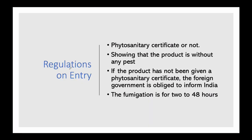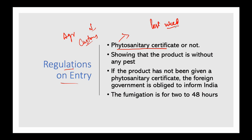When agricultural products come from other countries to India, our customs officers check whether they have a Phytosanitary Certificate or not. The Phytosanitary Certificate shows that the product has no infestation of any kind of pest or weed, and it is issued by the government of the exporting country. For example, if an agricultural product comes from Australia or America, we check the Phytosanitary Certificate issued by Australia or America as the exporting country - a guarantee that no pest or weed is present.